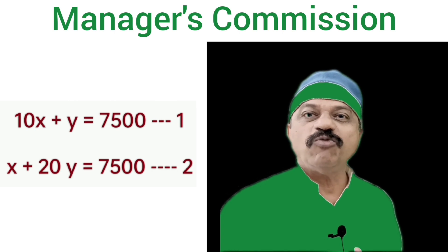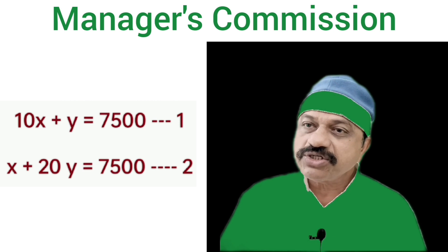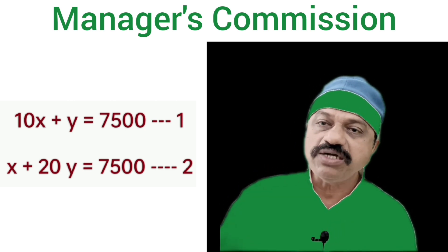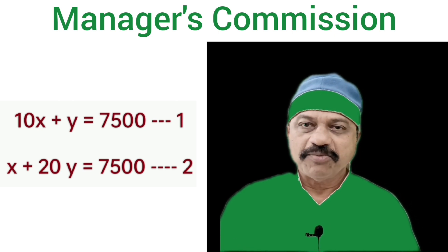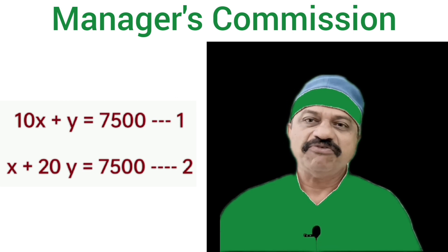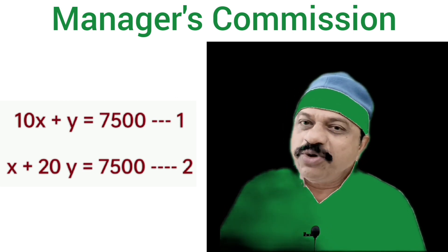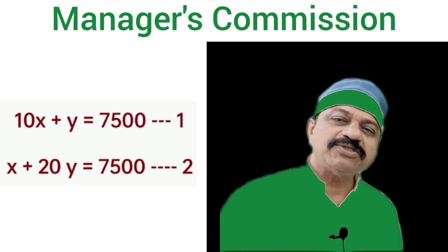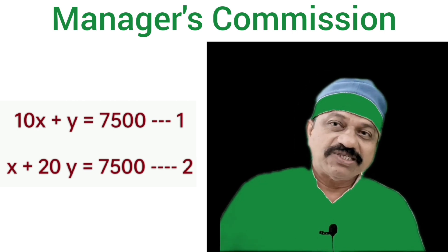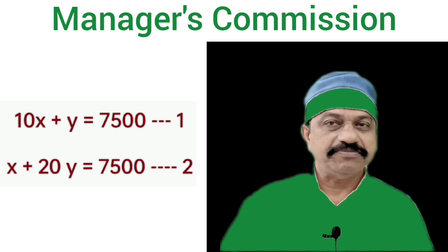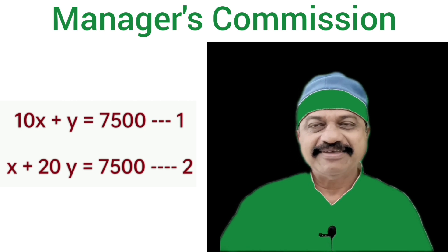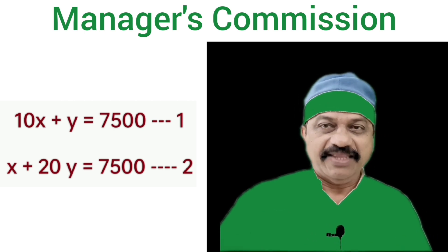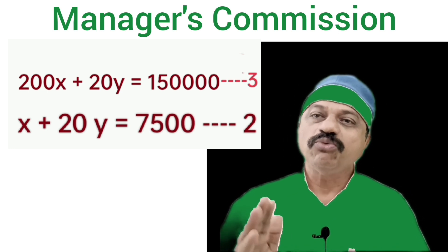Let's cancel the unknown variable y from the equation. The value of y in equation 2 is 20y. Therefore, we have to make the value of y in equation 1 also 20y. By deducting one equation from the other, we can nullify the value of y. In order to make the value of y in equation 1 equal to 20y, we multiply all elements of that equation by 20. Equation 1 is: 10x plus y = 7,500. So, 20 × equation 1 gives: 200x plus 20y = 1,50,000.